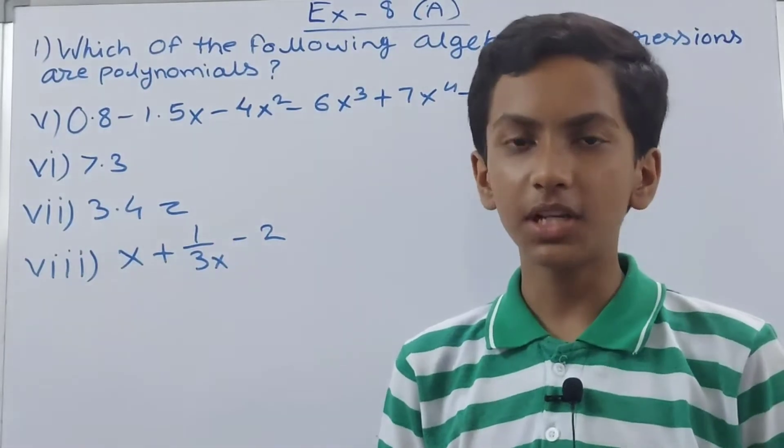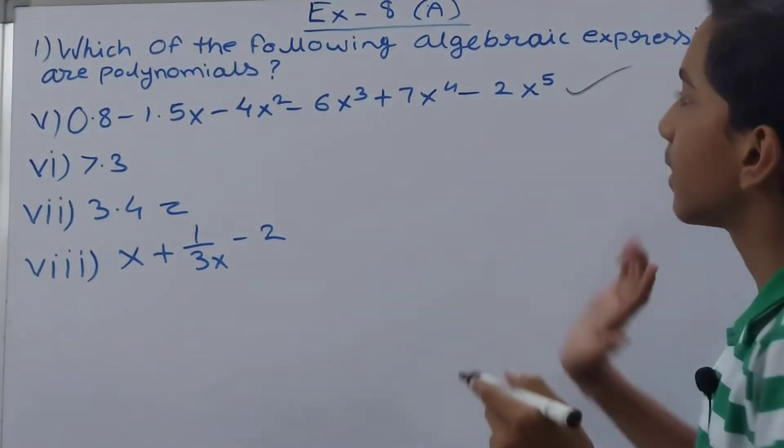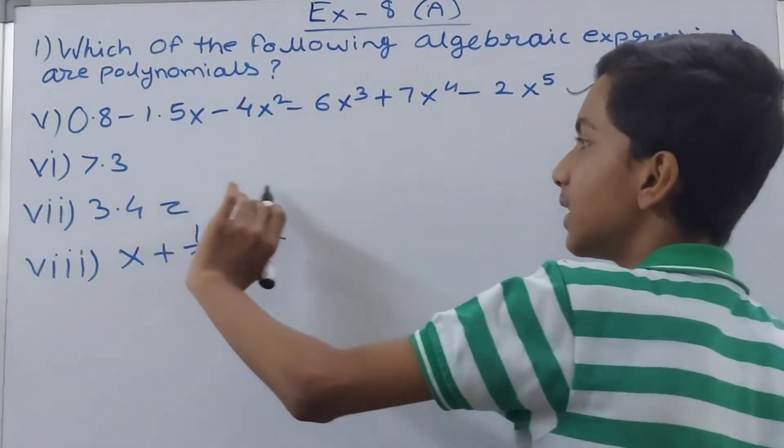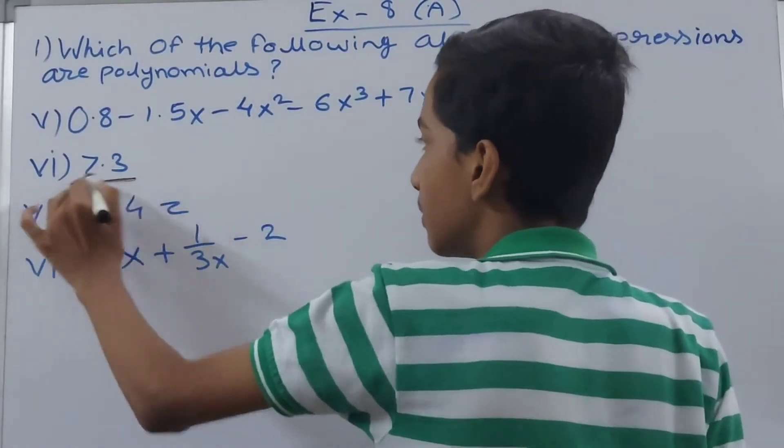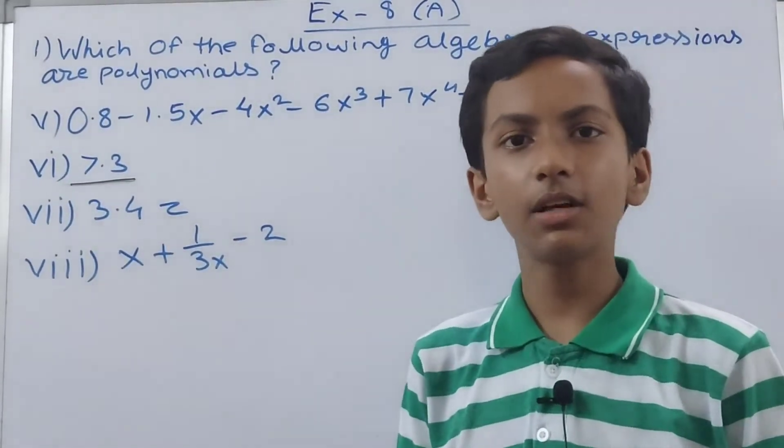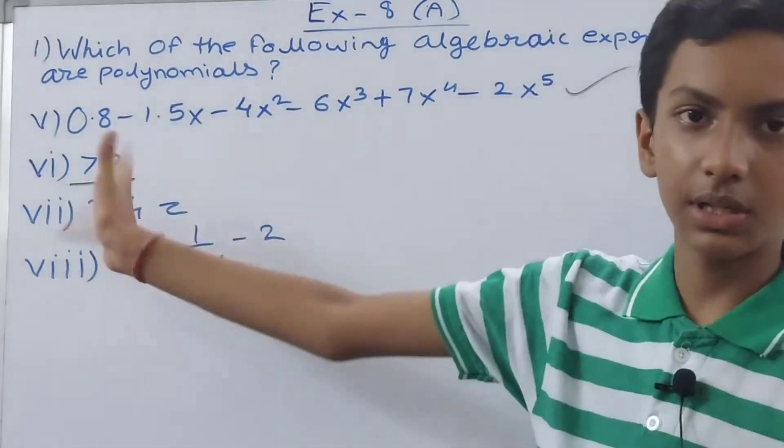This is clearly a polynomial because no variable is being used as a denominator. In the sixth one we don't have a variable, it's just a number, but it is still considered a polynomial. If only a number is written, it is also a polynomial.